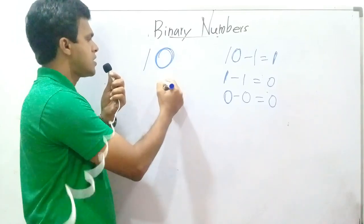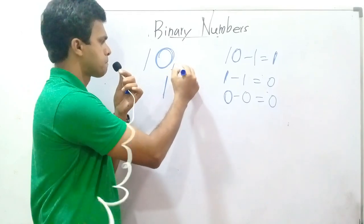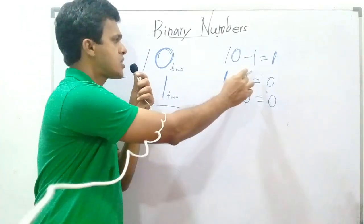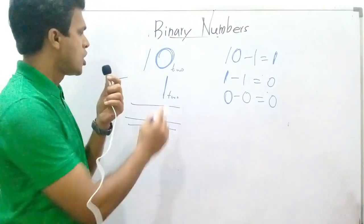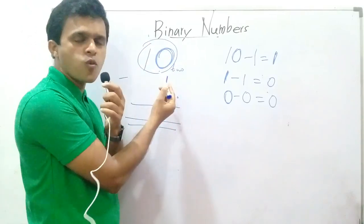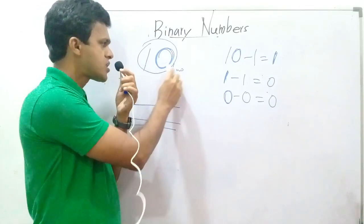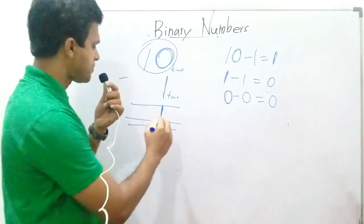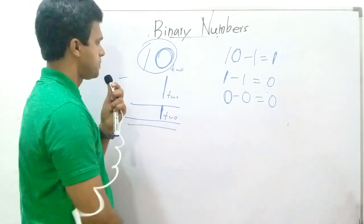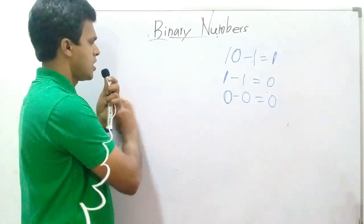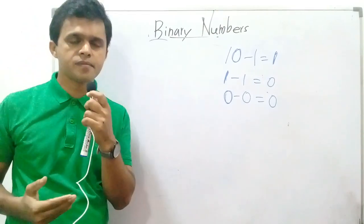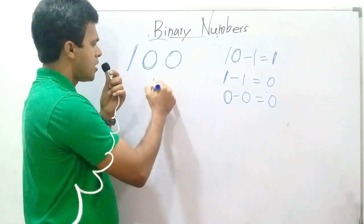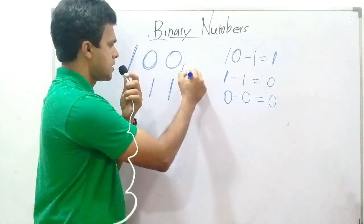Next sum: 10101 minus 101. Let's subtract. You can see that 10 minus 1 equals 1 — here this means 10. So 10 minus 1 equals 1. 0 minus 1 equals 1 here in base 2. The base is 2.